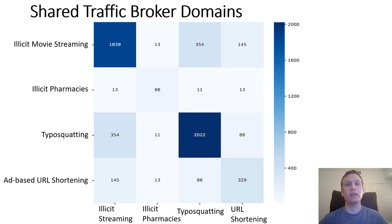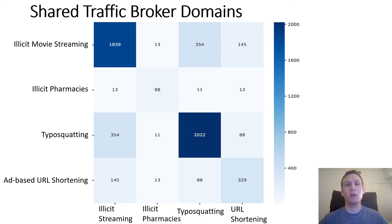Next, we discuss how these four very different traffic sources often rely on the same TDSs. Looking at the overlap of traffic broker domains, illicit pharmacies rarely use traffic brokers and prefer to directly redirect users to illicit stores — and even when they do use a broker, it is unlikely to be shared with other traffic sources. The other traffic sources, however, often use the same traffic broker domains — in some cases nearly half the time — and they also frequently redirect users to the same or similar destination pages.